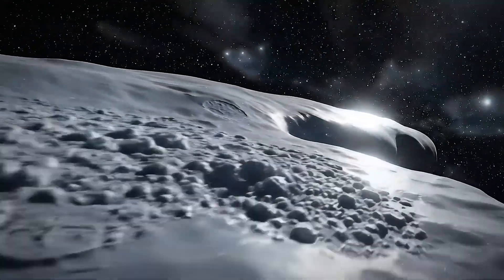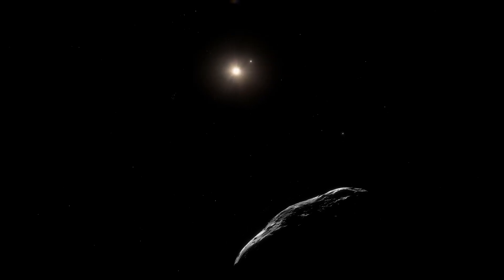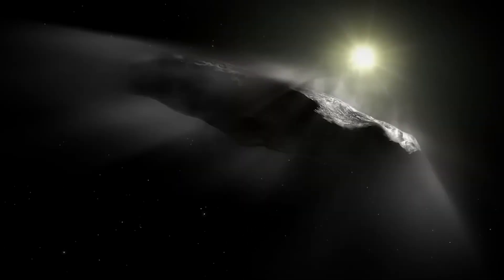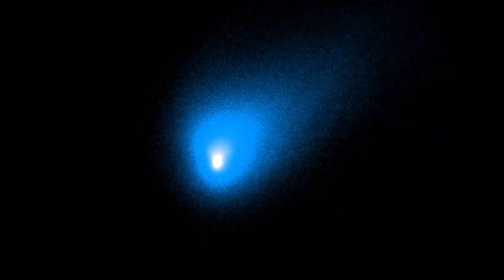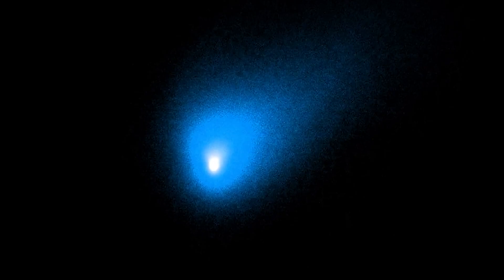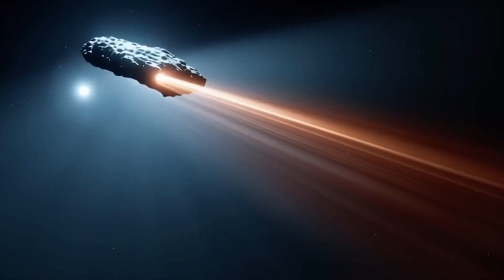Comets are supposed to be mostly ice, right? This thing is only four percent water. That's like calling a desert a lake because there's a puddle somewhere. But here's the smoking gun that's got even skeptics worried. This object is shooting out jets of material that stretch for millions of miles. These jets are perfectly straight, like laser beams, pointing in multiple directions.